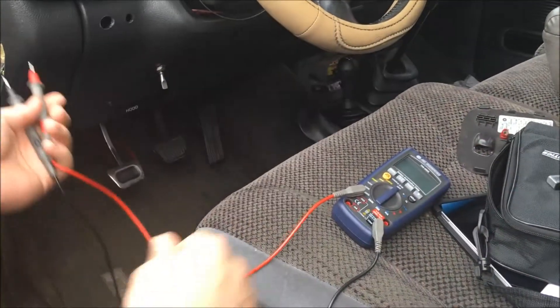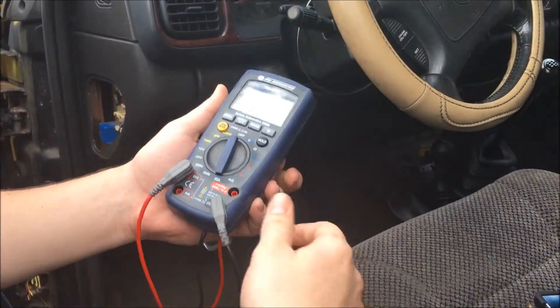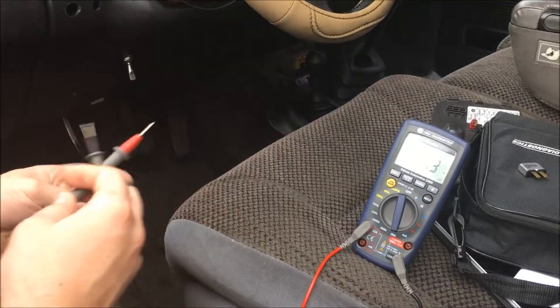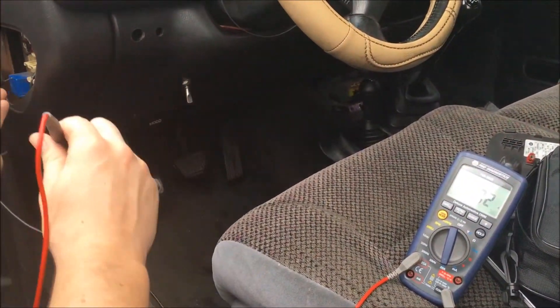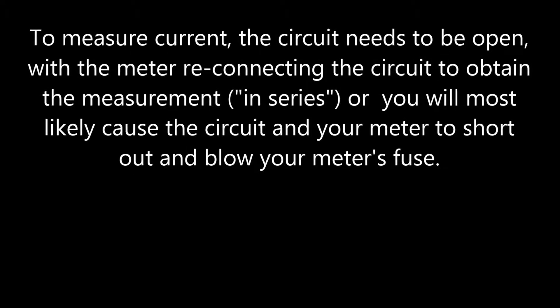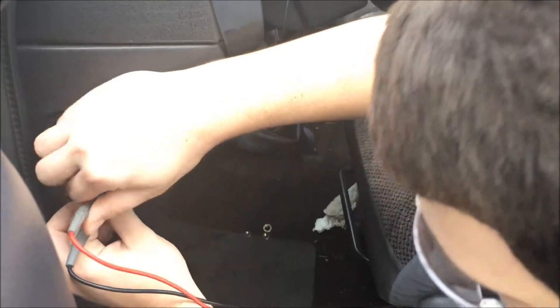Then we're going to turn the ignition on and activate the accessories. Set the meter to 20 amps, and then we're going to plug the leads in series — always go in series when measuring amps — and connect the circuit.